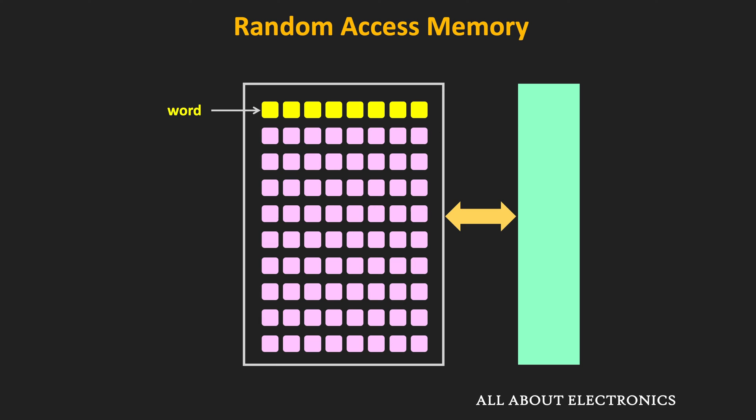Different memories can have different word lengths — one word may contain 8 bits, 16 bits, or even 32 bits. Whenever information is accessed from memory, all the bits of the word are accessed simultaneously. The architecture of RAM is such that the time required to access any word in the memory is the same. That means transferring information to or from any random word in the memory requires the same amount of time, and that is why this memory is known as the Random Access Memory.